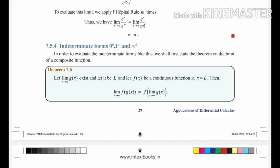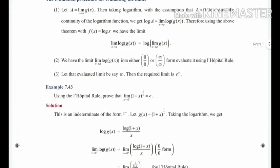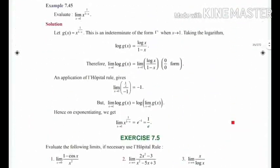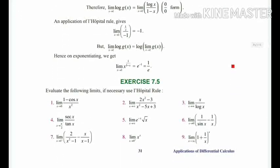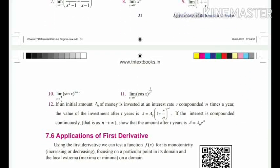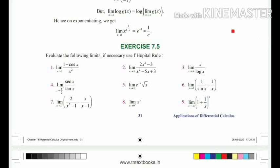If you look at Section 7.5.4 — Indeterminate Forms — the topic itself is in the portion. However, in Exercise 7.5, question numbers 8, 9, 10, and 11 — these four questions — you have to delete them. The associated examples in those sums are also deleted.